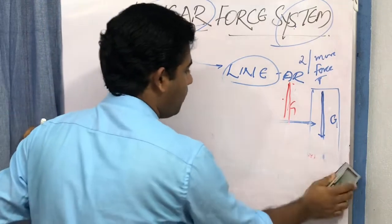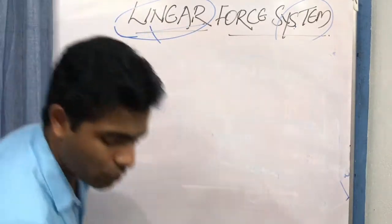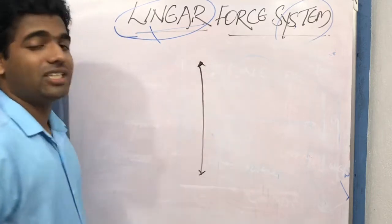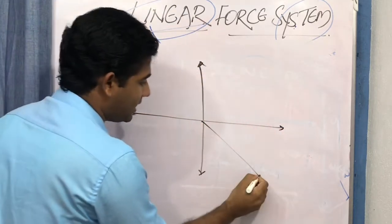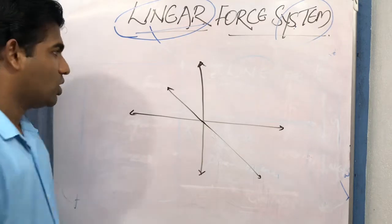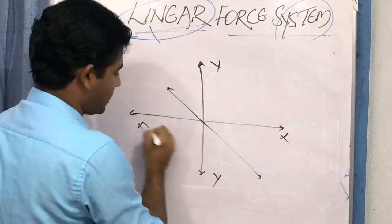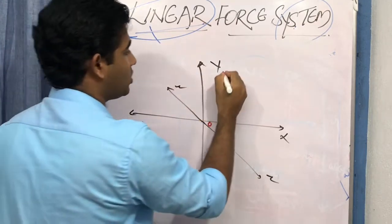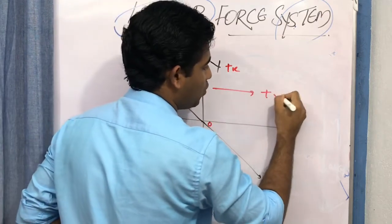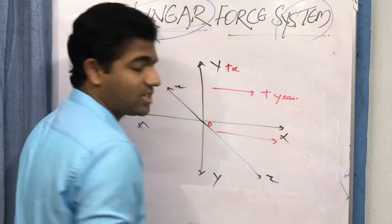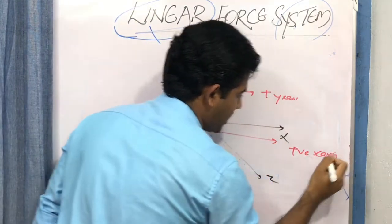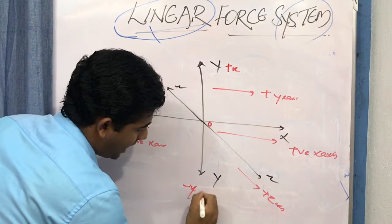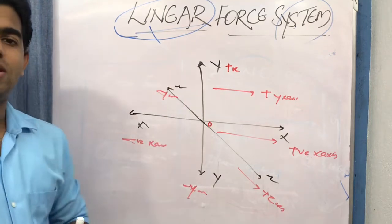The forces in the linear force system are given plus and minus values. For this, remember the Cartesian coordinate system: the x-axis, y-axis, and z-axis. Up the y-axis is the positive y direction, to the right of the x-axis is positive x, to the left is negative x, forward along the z-axis is positive z, and downward is negative y.